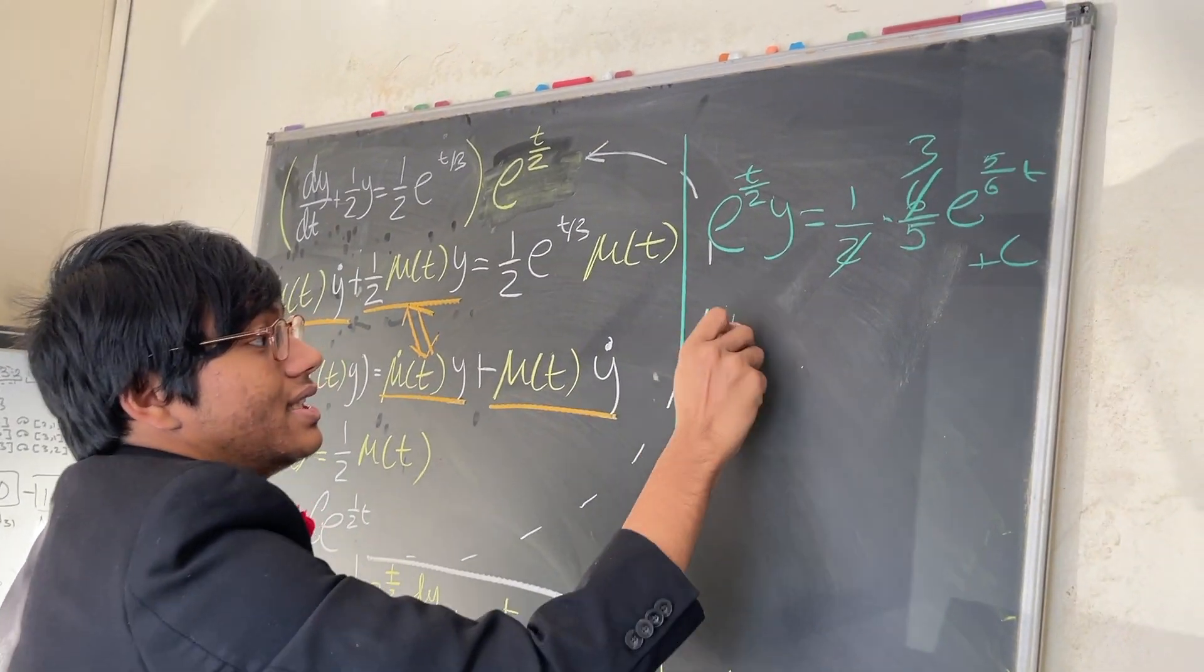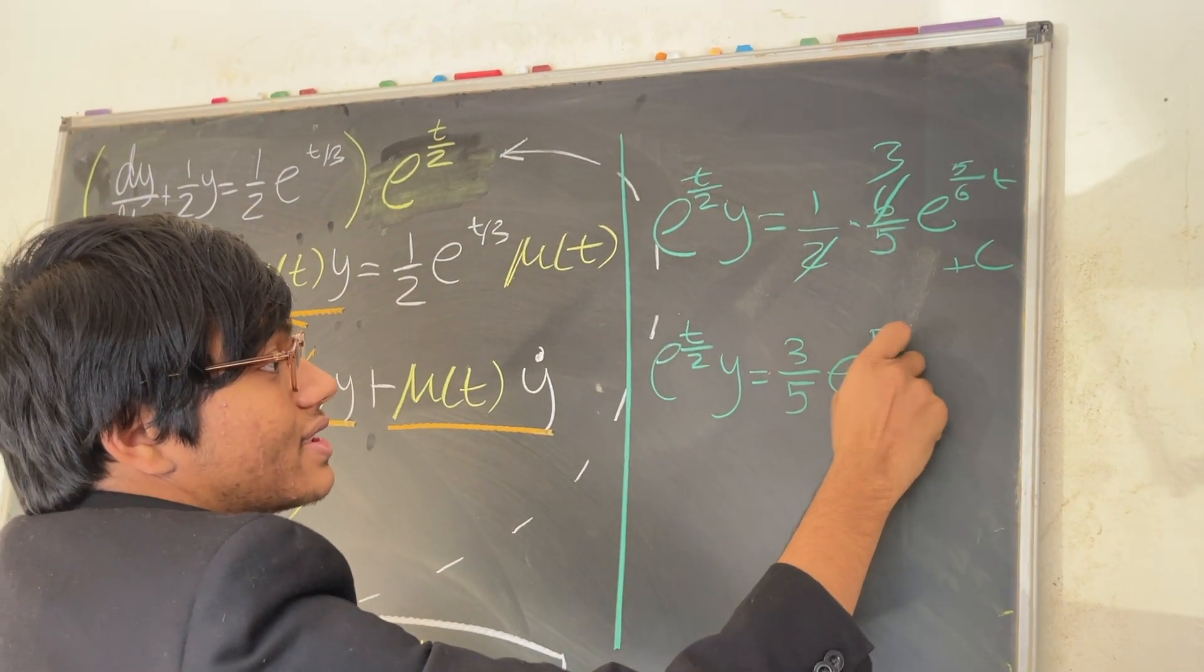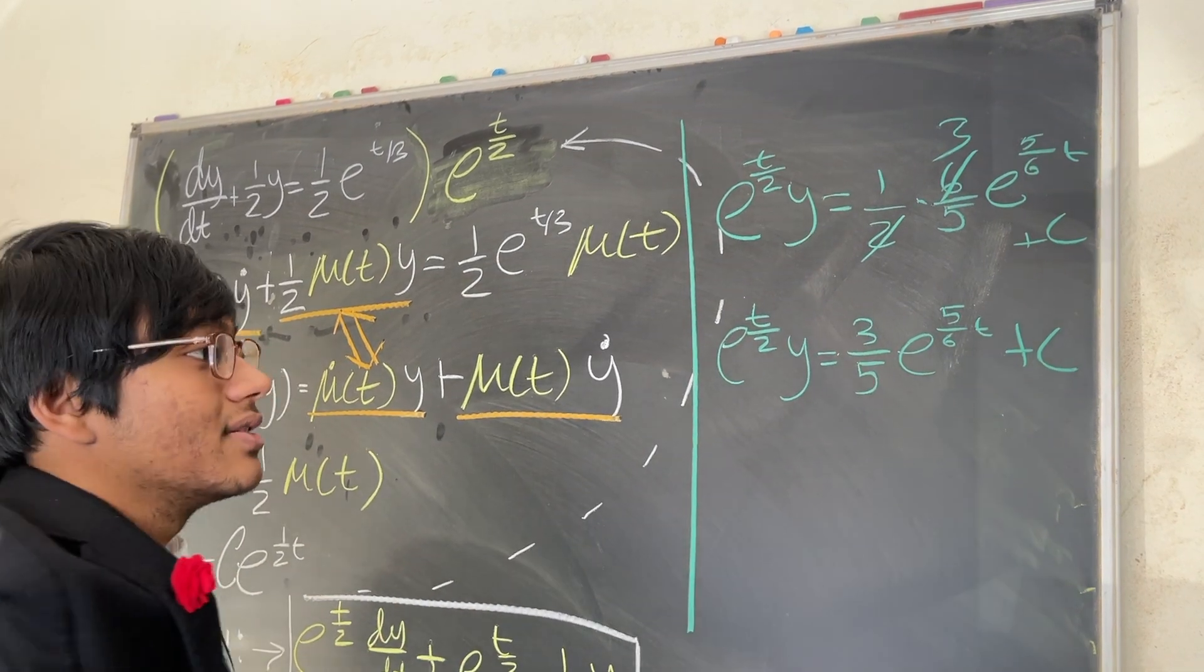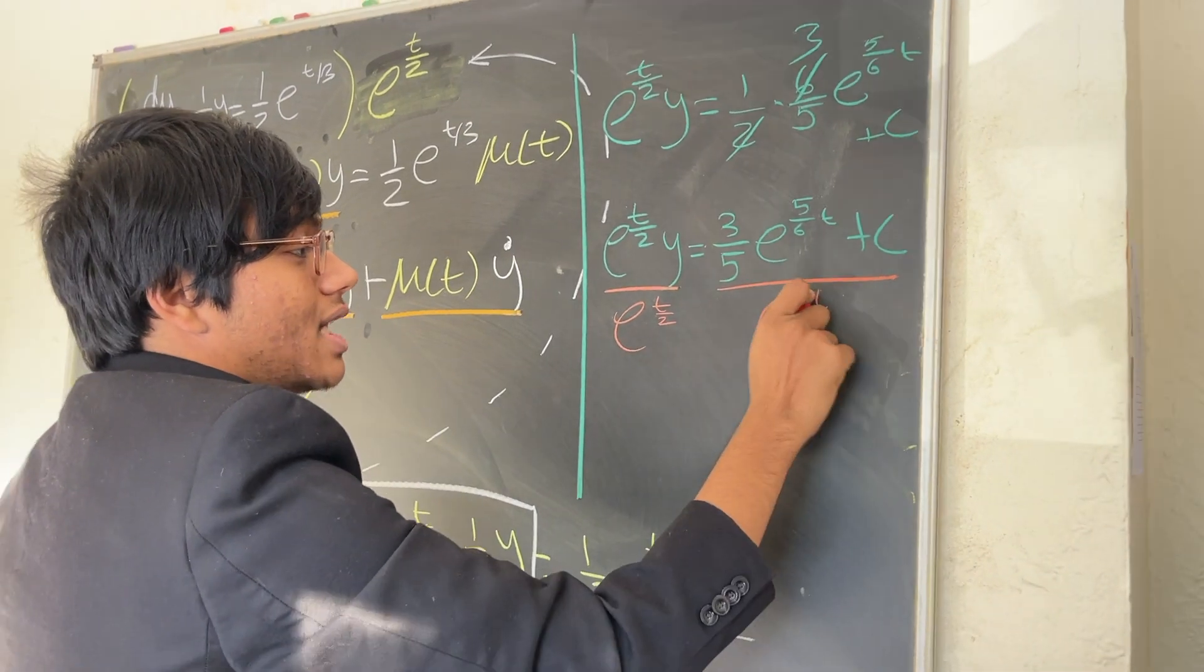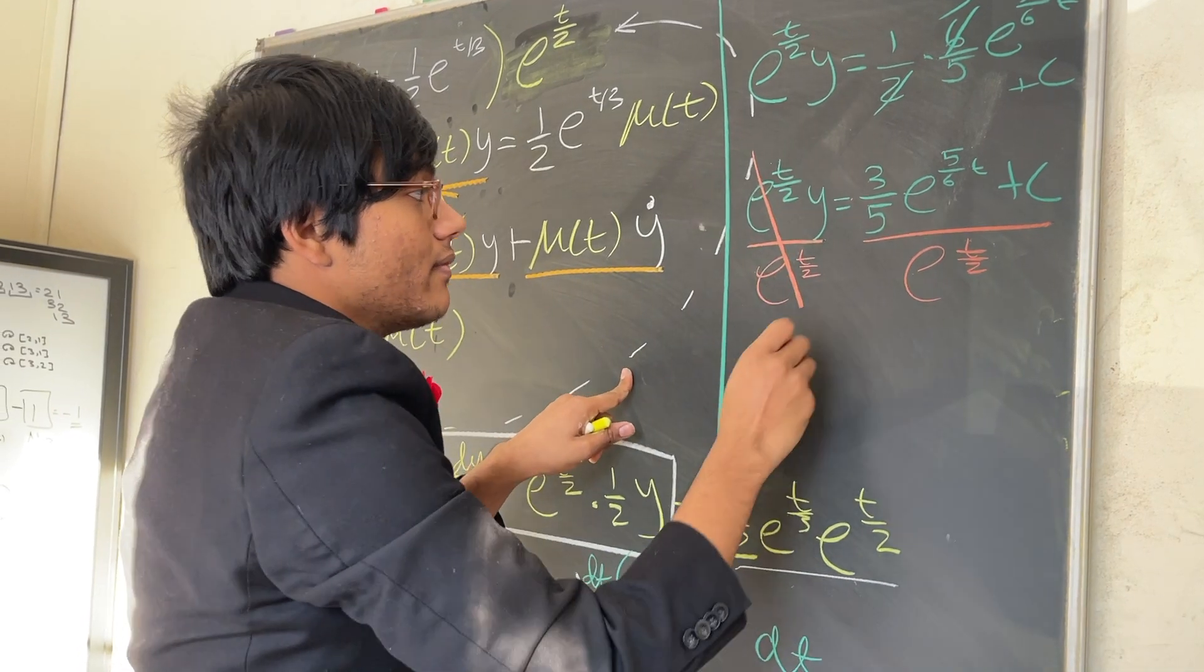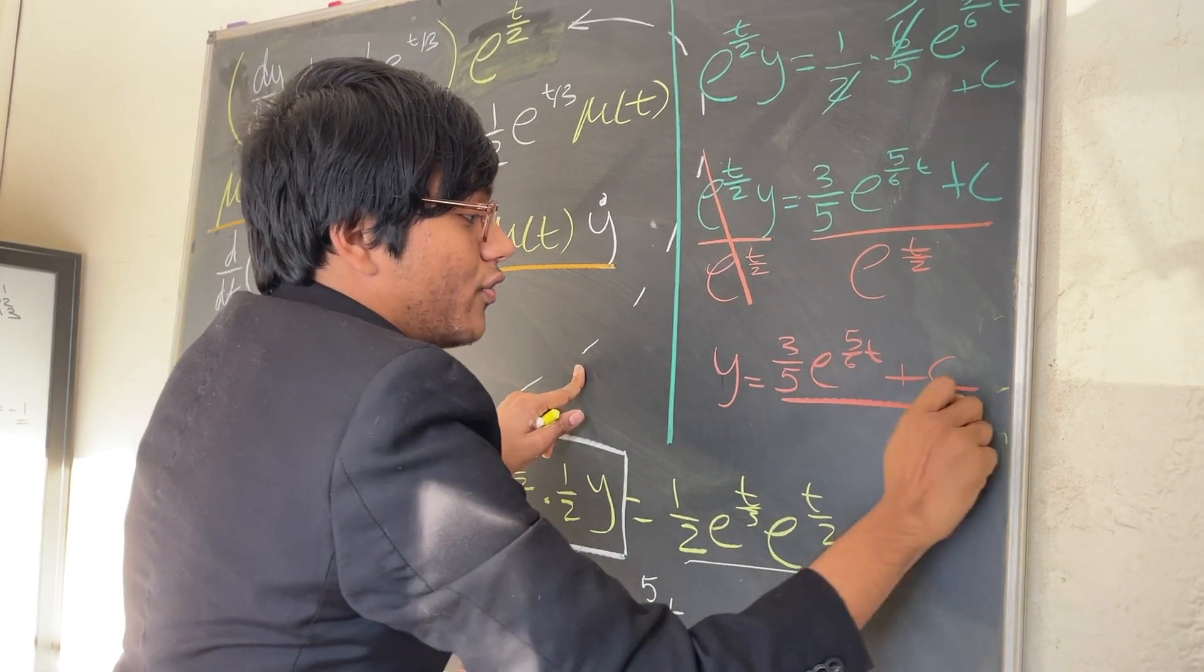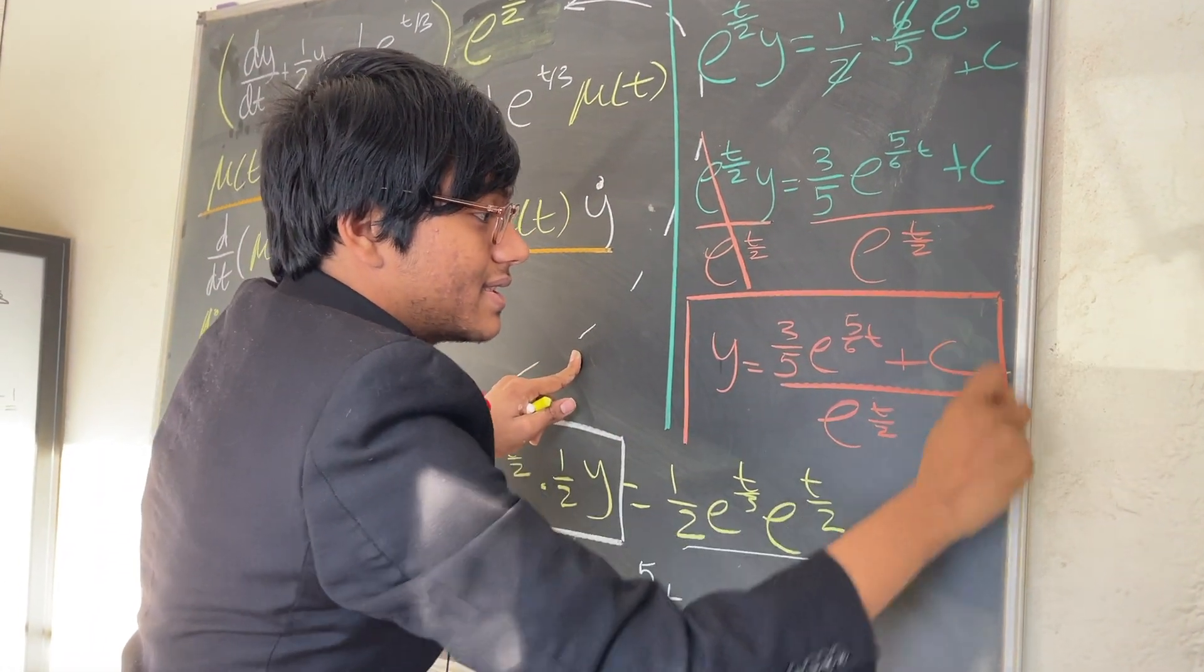So if I just simplify, I'm left over with e to the t over 2y is equal to 3 over 5 e to the 5/6t plus c. And now to top off this very simple problem, all we have to do is isolate y. And now the high school dropout is correct. All we have to do is divide both sides by e to the half of t. And so my final answer becomes y is equal to 3 fifths e to the 5 sixth of t plus c over e to the t over 2. And of course you can simplify, that's just basic algebra, but this is our final answer.